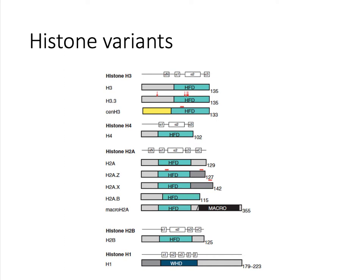You can see from this diagram that all of them, with the exception of the linker histone H1, share the histone fold domain, shown here in green. You can also see that the number of variants differs among the core histones. H3 has several, and so does H2A. A lot of these histone variants are species specific, but there are a few commonalities. Most species have a version of H3.3, CenH3, and H2AZ.